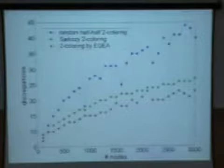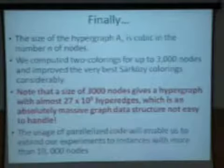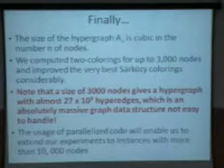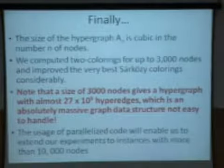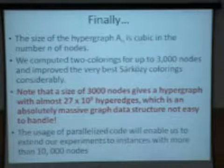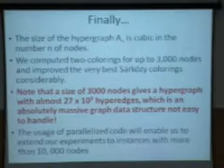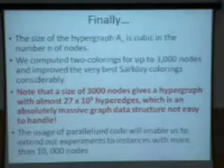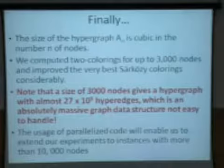We started from the Sarkozy coloring and used our quantum evolutionary algorithm to improve it. The blue dots show the random half-half coloring, the green dots show the Sarkozy coloring, and the red dots show the improved coloring we obtained. We've tried this up to 3000 nodes — when you're dealing with a hypergraph of 3000 nodes, you're dealing with 27 billion hyperedges, which is not an easy data structure to handle. We've also developed a parallel version on a cluster of 192 workstations, which will enable us to extend experiments to instances with more than 10,000 nodes — that's 10^12 hyperedges.